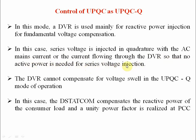Since the series voltage is injected in quadrature with the AC mains current — that is, with a 90-degree shift — no active power is needed for series voltage injection. Therefore, this DVR cannot compensate for voltage swells in the UPQC-Q mode of operation.